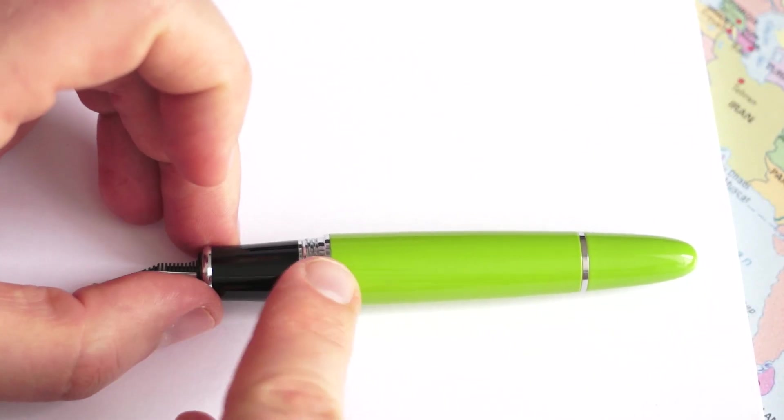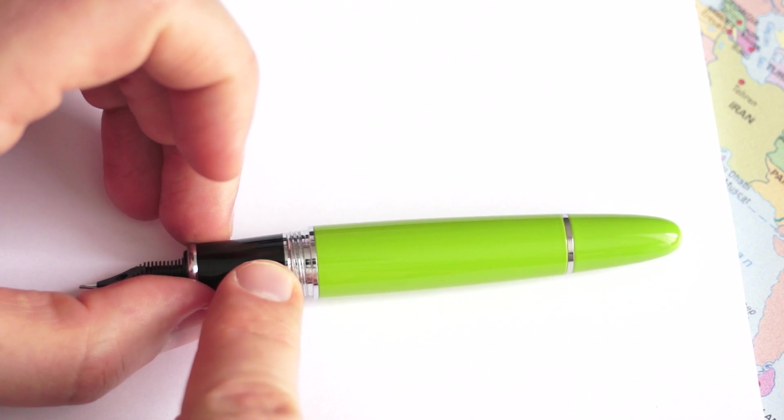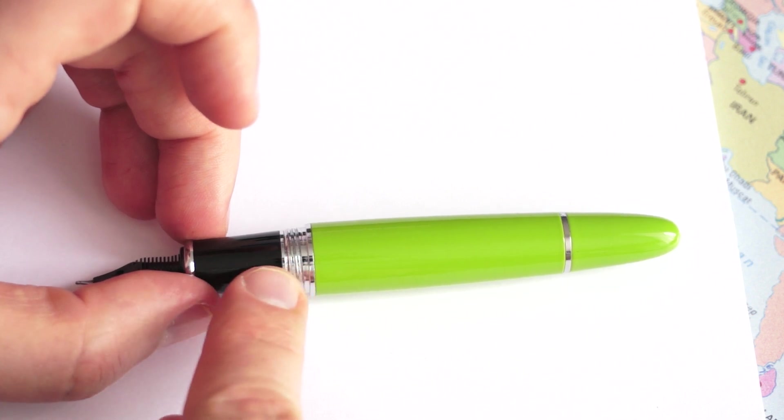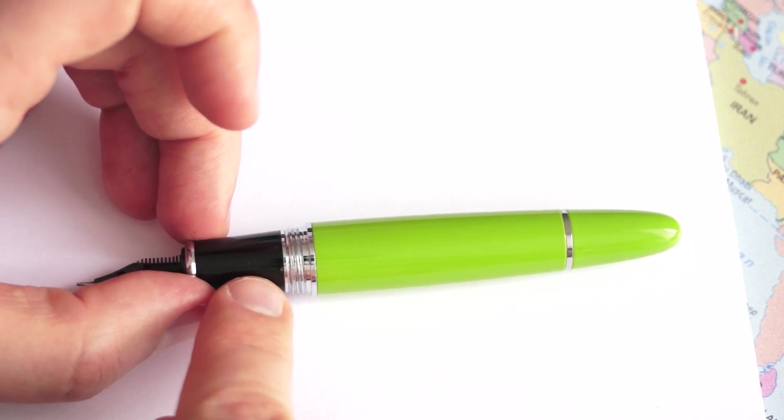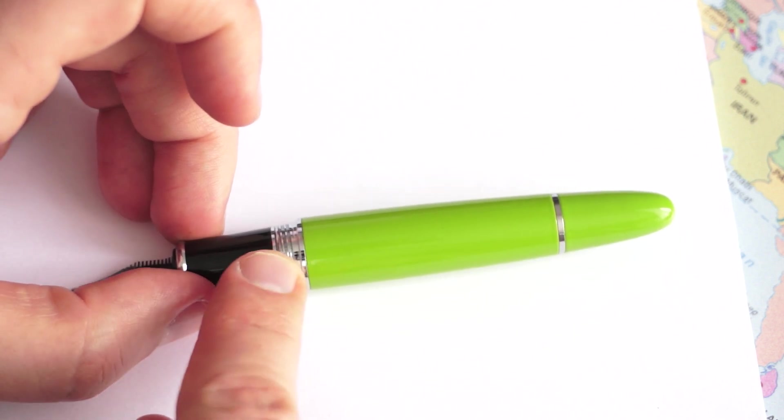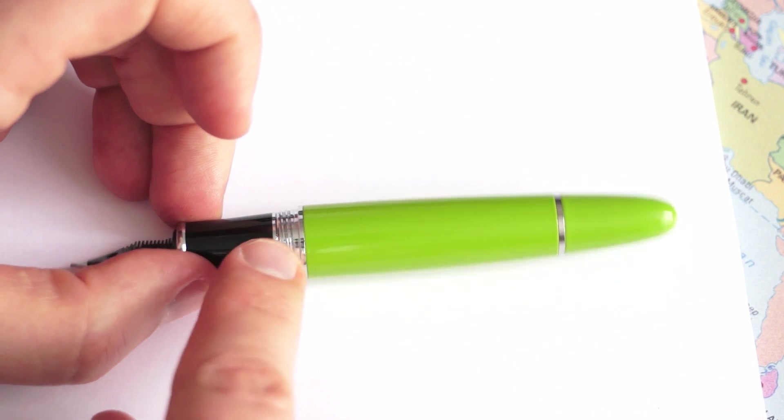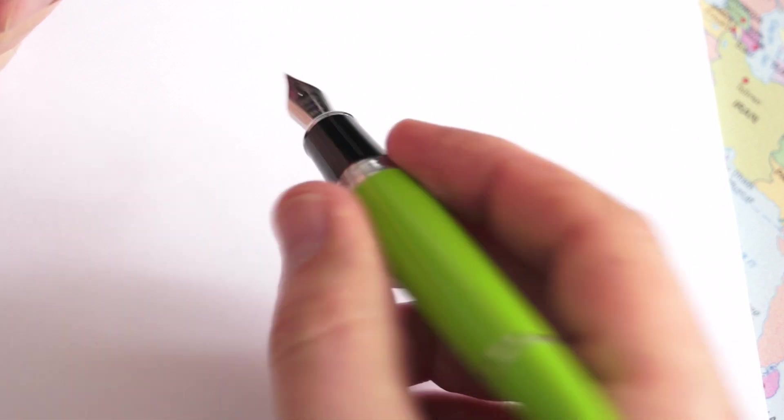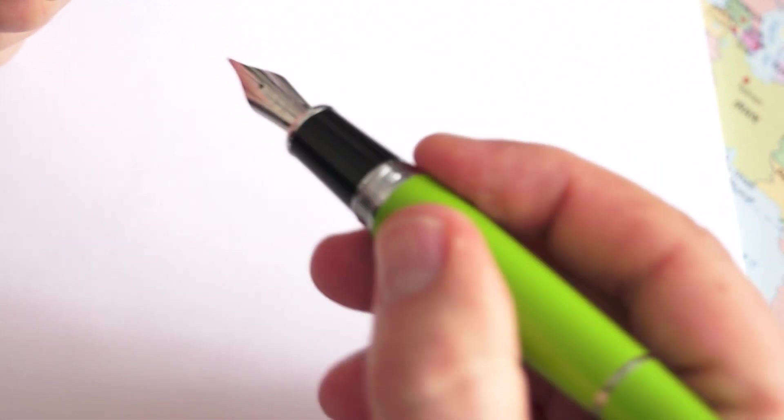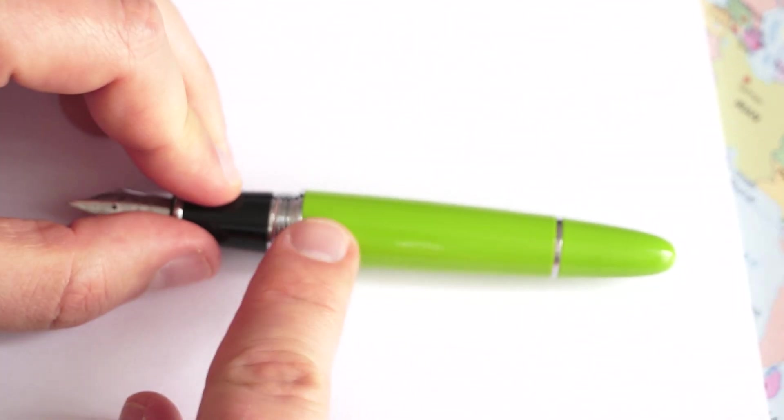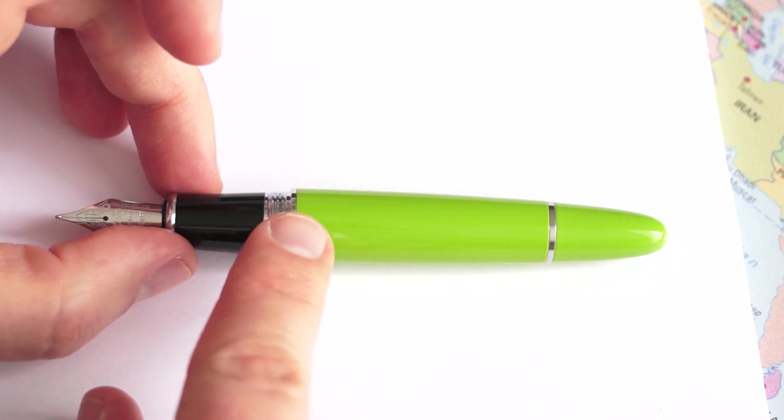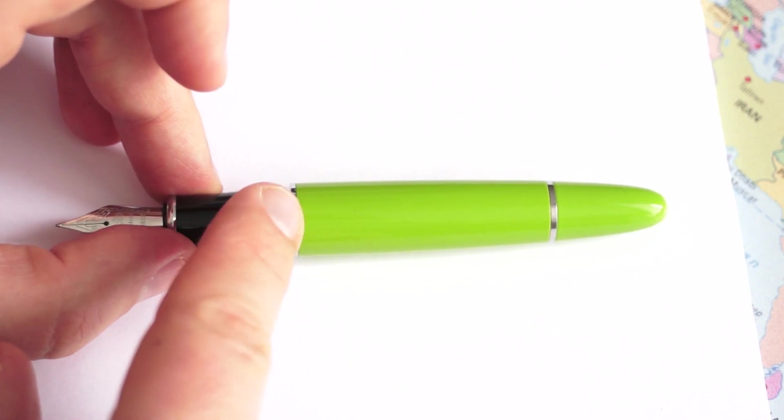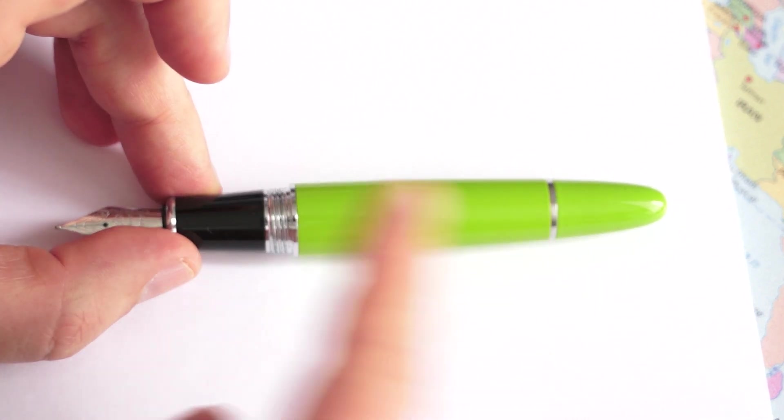Between the barrel and the section we have chromium trim again with threads, but these threads are not sharp at all. They are somehow embedded into the material and there's no discomfort if you hold it this way. There is a slight step down between the barrel and the section, and this step down is a little bit sharper than any of the threads for the cap.